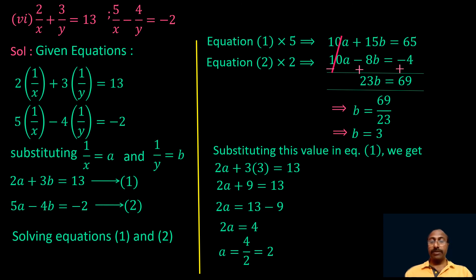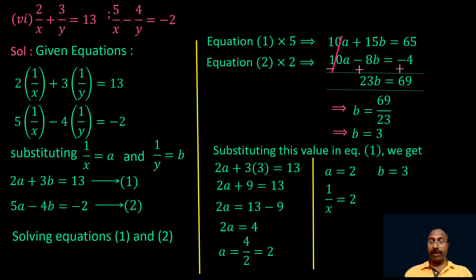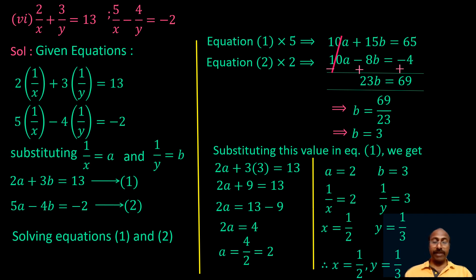We got values a equal to 2 and b equal to 3. Since a is 1 by x and b is 1 by y, we have 1 by x equal to 2 and 1 by y equal to 3. So x equal to 1 by 2 and y equal to 1 by 3. The solution of the given equations is x equal to 1 by 2 and y equal to 1 by 3.